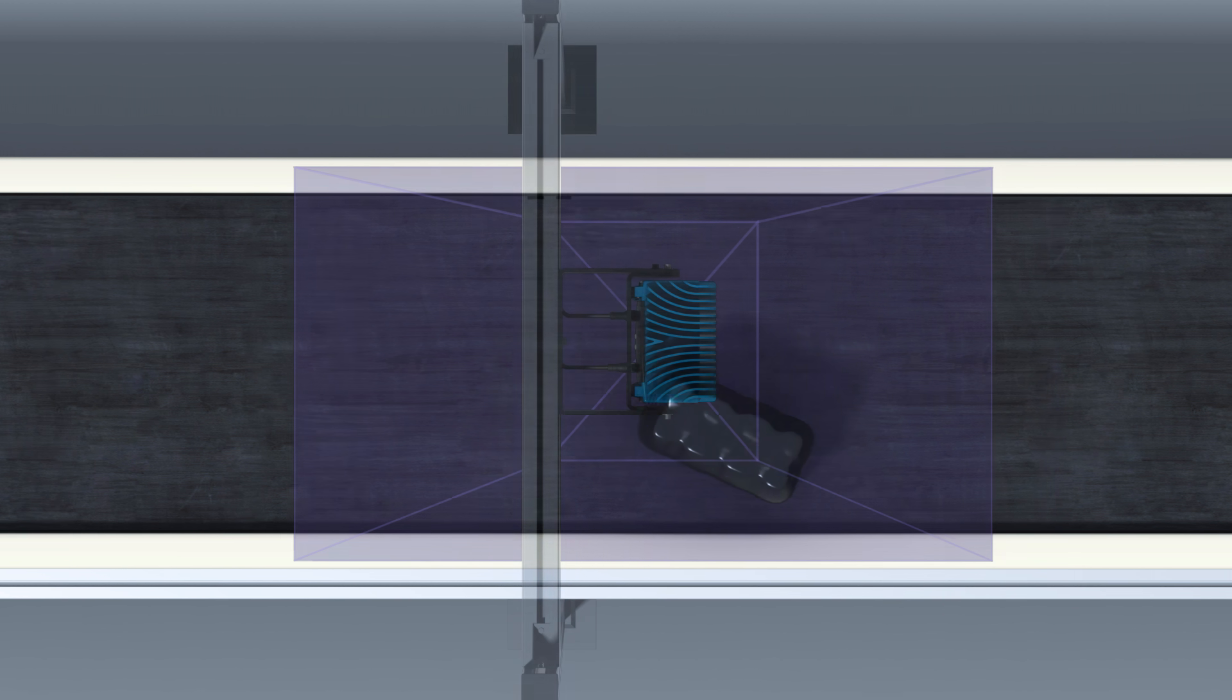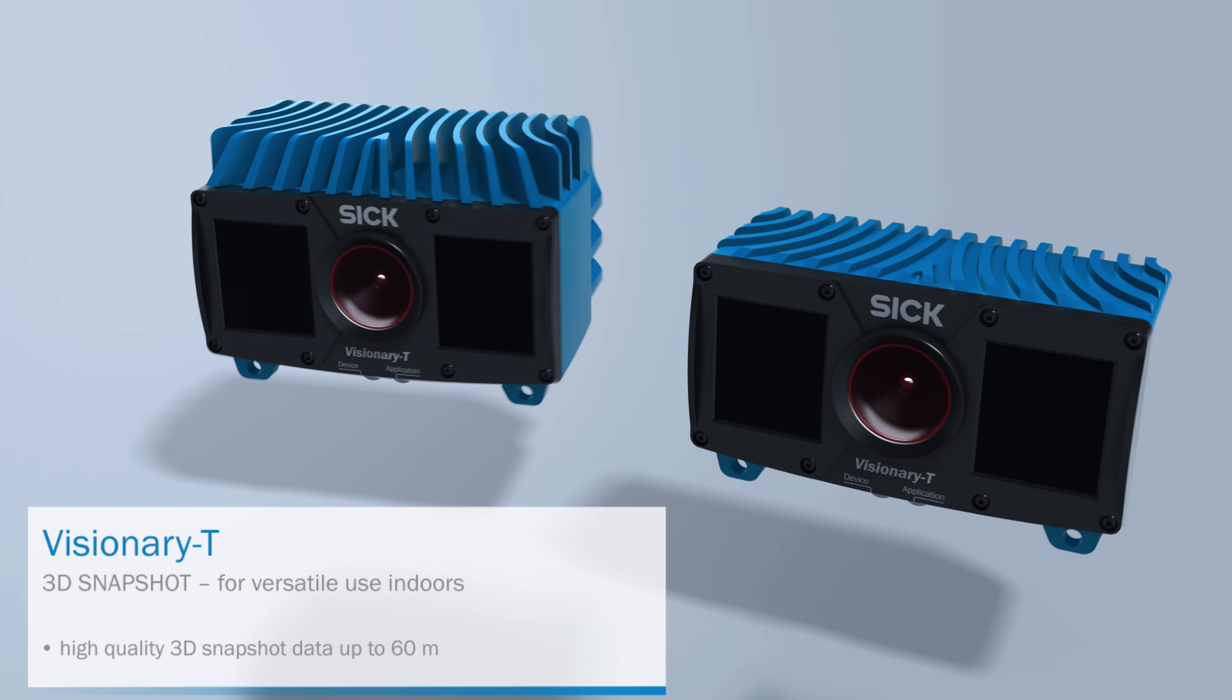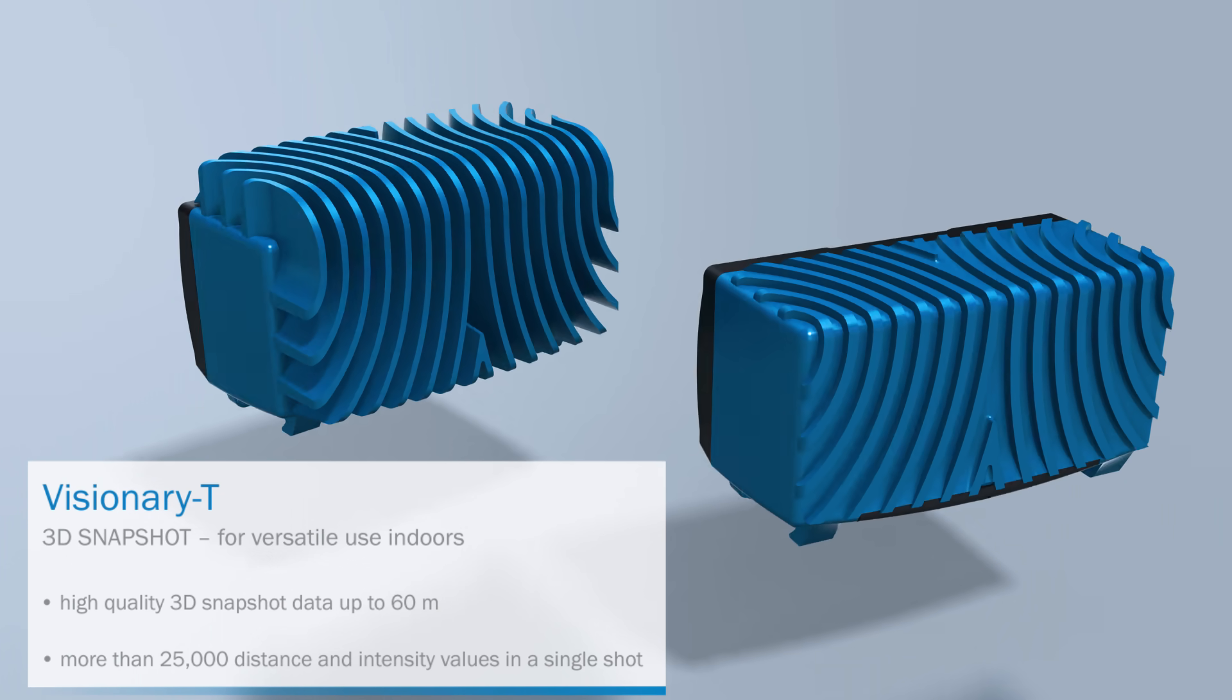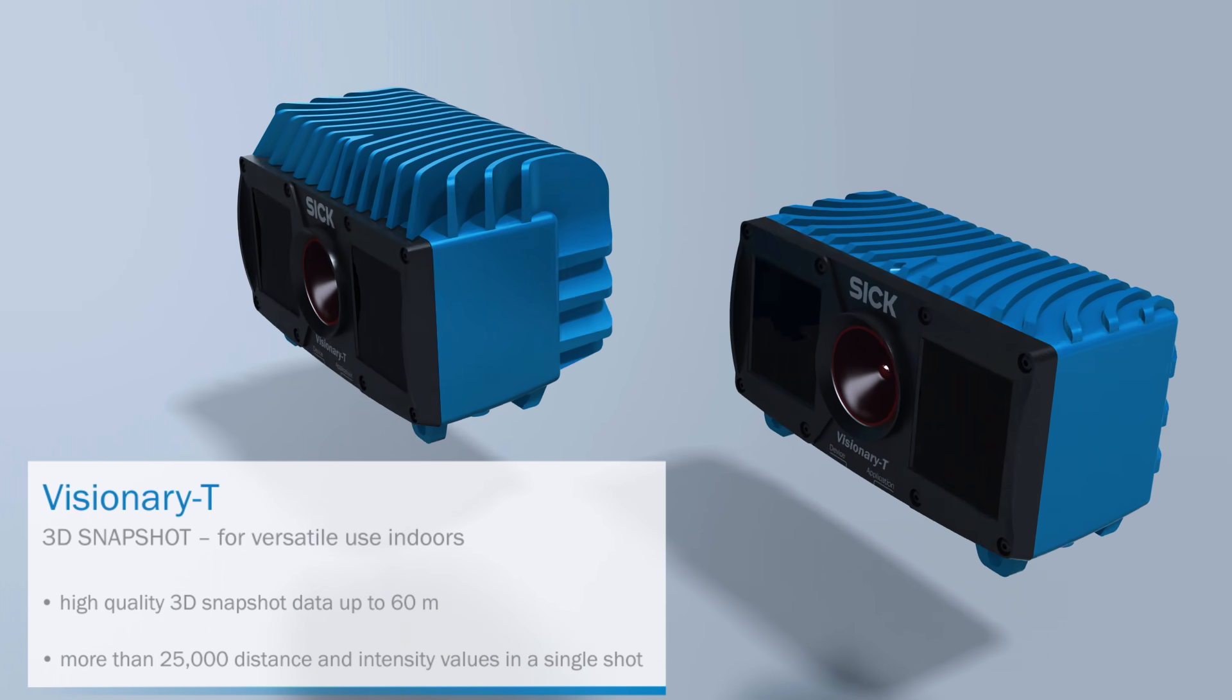With its 3D snapshot technology and a range of up to 60 meters, Visionary T delivers high-quality 3D data with more than 25,000 distance and intensity values in a single shot.